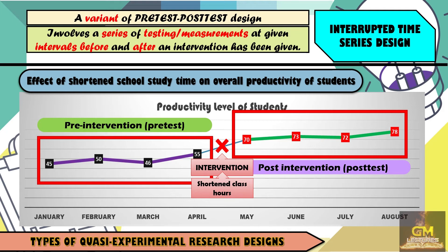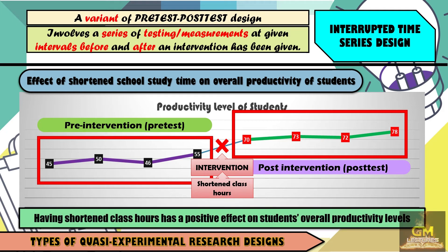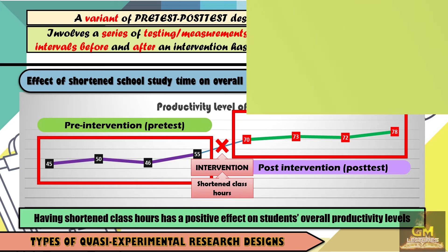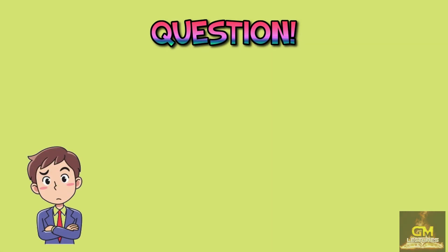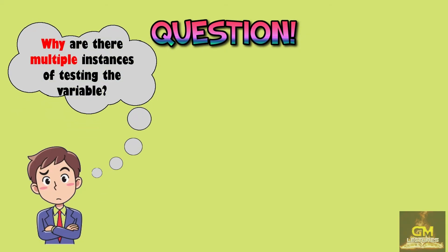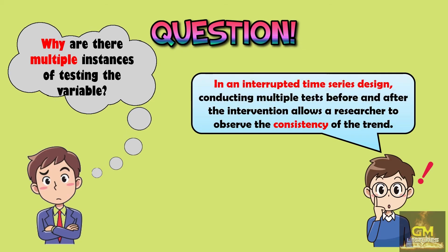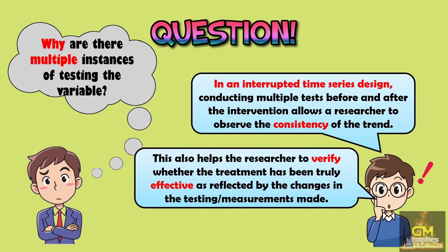From this example, the researcher can have the conclusion that having shortened class hours has a positive effect on students' overall productivity levels. Now, before we continue, let's answer another question: Why are there multiple instances of testing the variable? In an interrupted time series design, conducting multiple tests before and after the intervention allows a researcher to observe the consistency of the trend. Also, this helps the researcher to verify whether the treatment has been truly effective as reflected by the changes in the testing and measurements made.